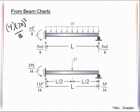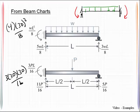We've also got the 3PL over 16. Now we do have another condition that is not being represented here, and that is for the fixed fixed with the distributed load. Those moments right here will be WL squared over 12.